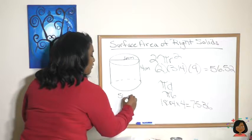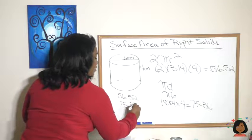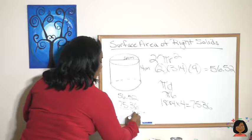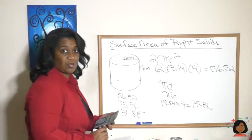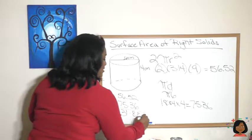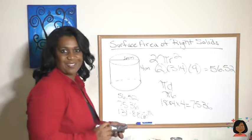Now I've got to add this all together. So I'll do it right over here. 56.52, 75.36, eight, thirteen. So 131.88 centimeters squared. That's your answer.